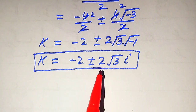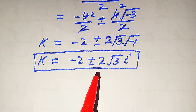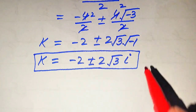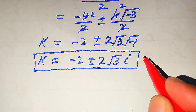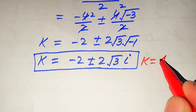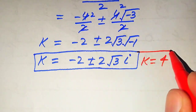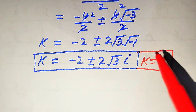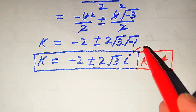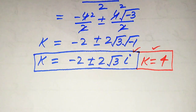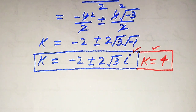Finally, the equation has three roots: two complex roots k equals minus 2 plus or minus 2i root 3, and one real root k equals 4. These are the three roots of the given equation and this is our final answer. Thank you so much for watching this video — please subscribe to my channel for more exciting videos.